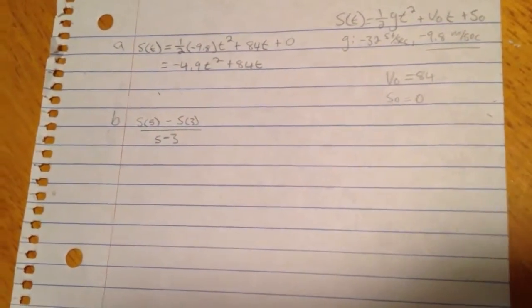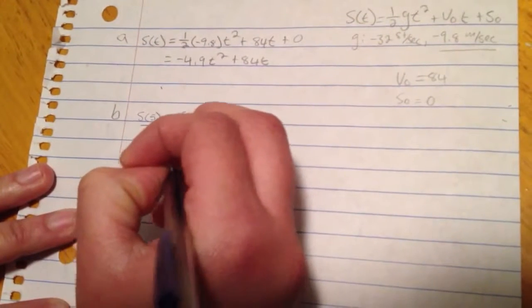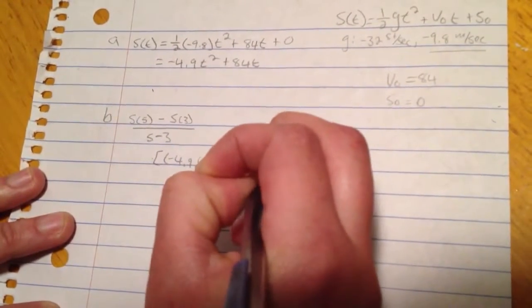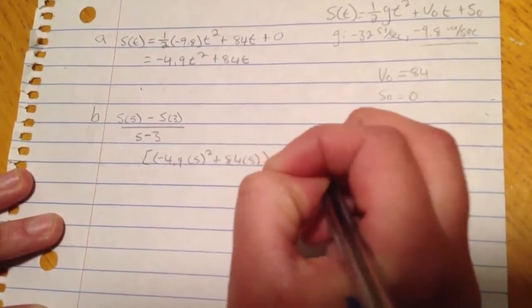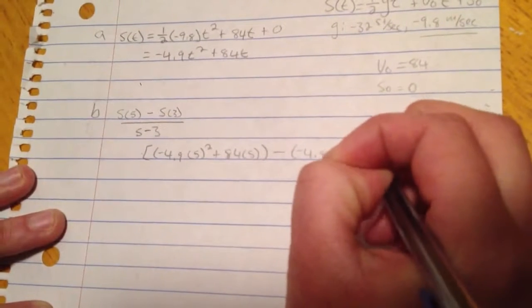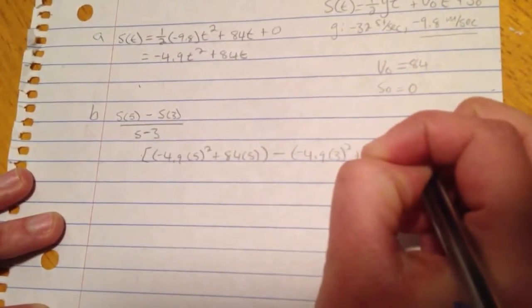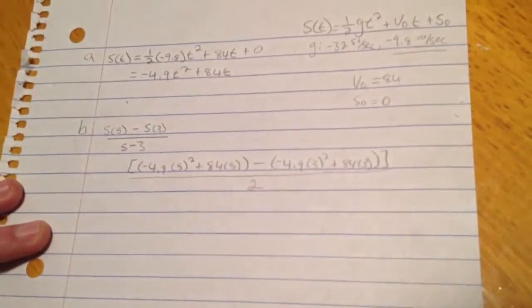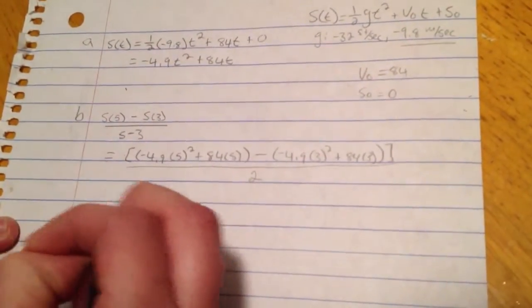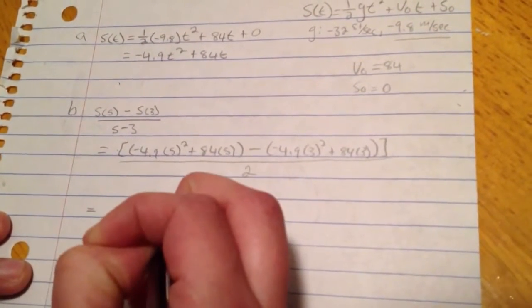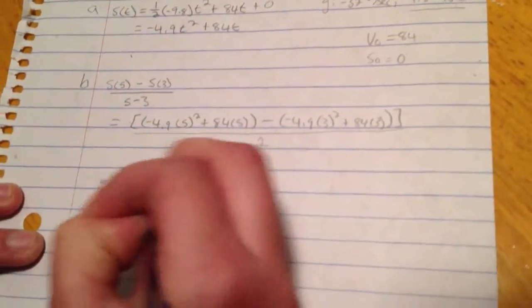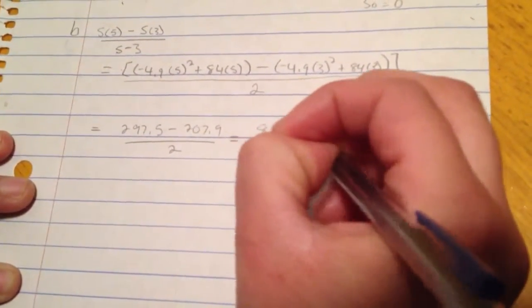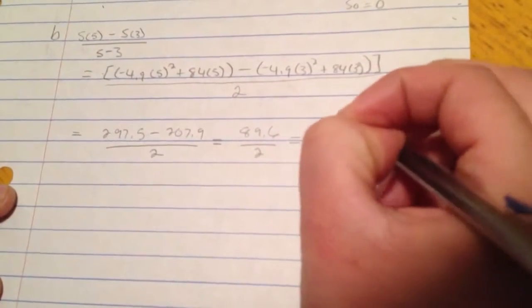So when we write this out, we're going to end up with negative 4.9 times 5 squared plus 84 times 5, minus negative 4.9 times 3 squared plus 84 times 3, all over the change in time, which is 2. So this is going to give us 297.5 minus 207.9 all over 2, which equals 89.6 over 2. So our answer is going to be equal to 44.8 meters per second.